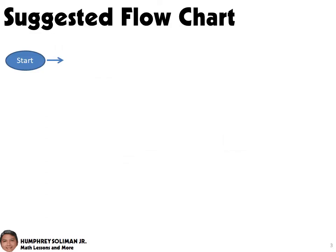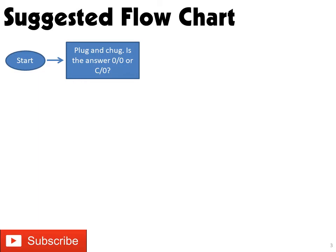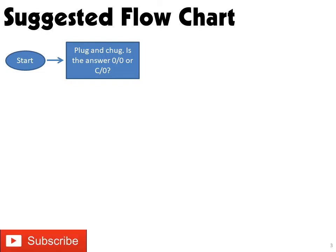I have here a suggested flowchart for solving for the limit of a function. When we start answering a limit notation, our first option is to use plug and chug. Plug and chug limit problems are very easy to solve. Just plug the arrow number into the limit function, and if the computation results in a number, that's already the answer.